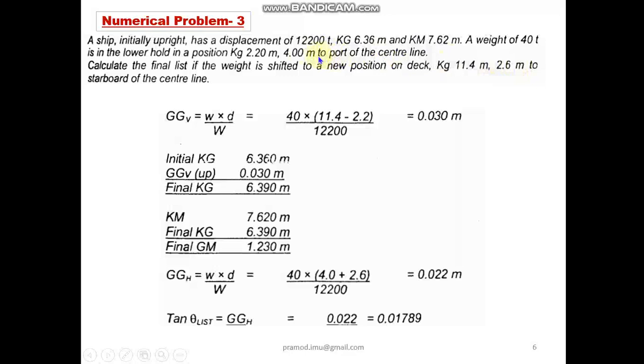As it is clearly said, from 4 meters port to 2.6 meters starboard. So for this reason we are adding the distance from 4 meters to central line, the distance of 4 meters, plus from central line to 2.6 meters. So we are adding here, please don't get confused. Here there is subtraction, here there is addition. Divided by your displacement of the vessel, 12,200, so you will get 0.022.